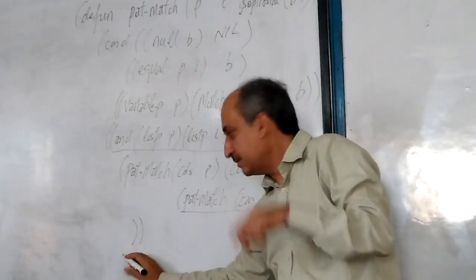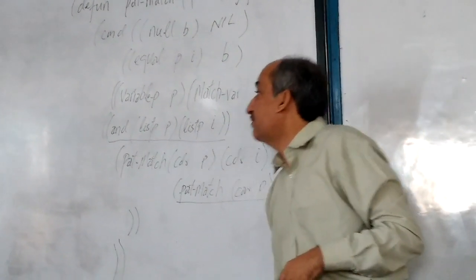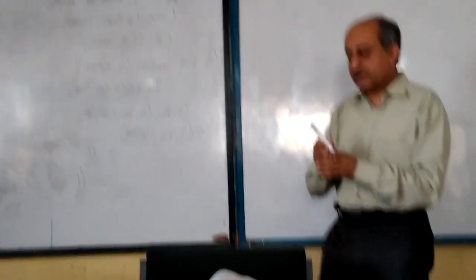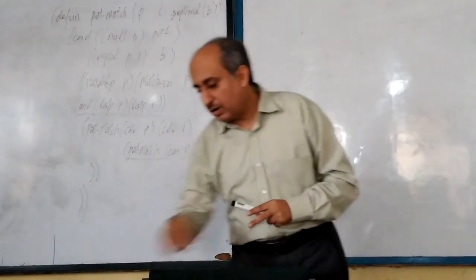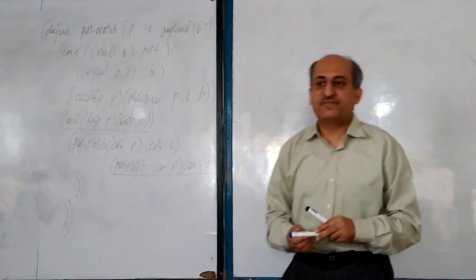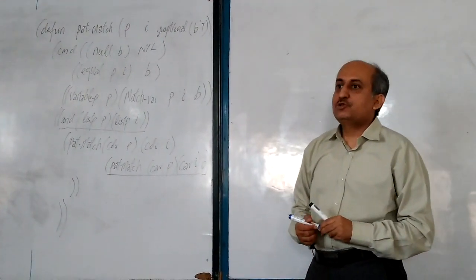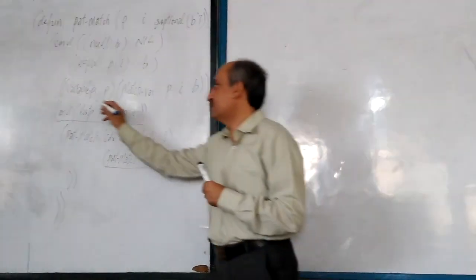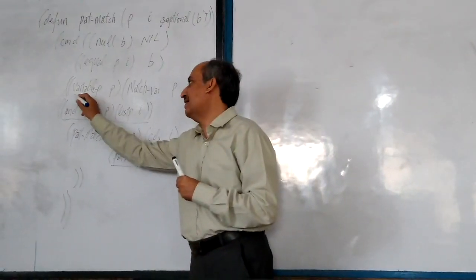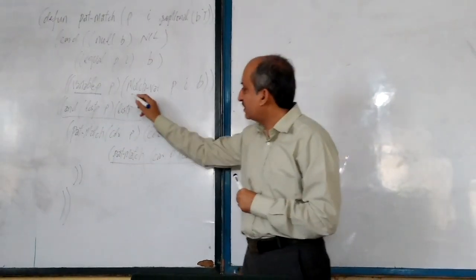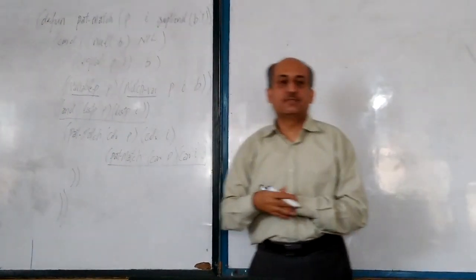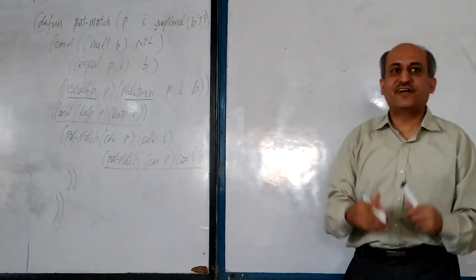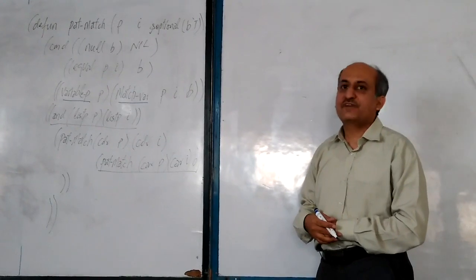Now, before tracing this FADMatch function, there are two functions which are being called in the FADMatch definition that we should understand. One is the variable? function, and the second is the match-variable function. These are programmer-defined functions and we will be understanding their functionality.